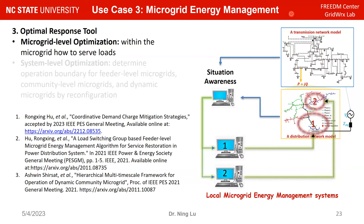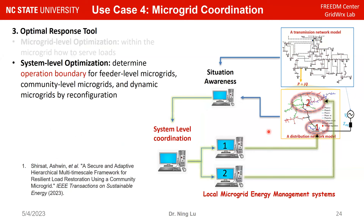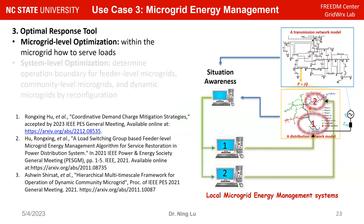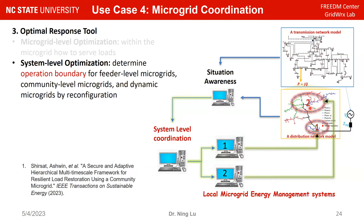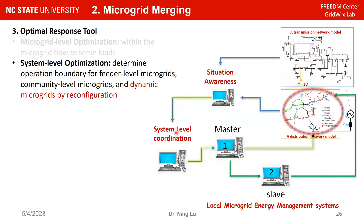Using this environment, we can design different microgrid energy management systems. We test how to control a circuit with different microcontrollers, and coordinate two microgrids at the system level — for example, expanding area two's coverage and shrinking area one's when resources allow. We can design individual microgrid controllers, system-level coordination, and microgrid merging. This high-fidelity simulation system lets us not only develop these methods but test them across different scenarios.